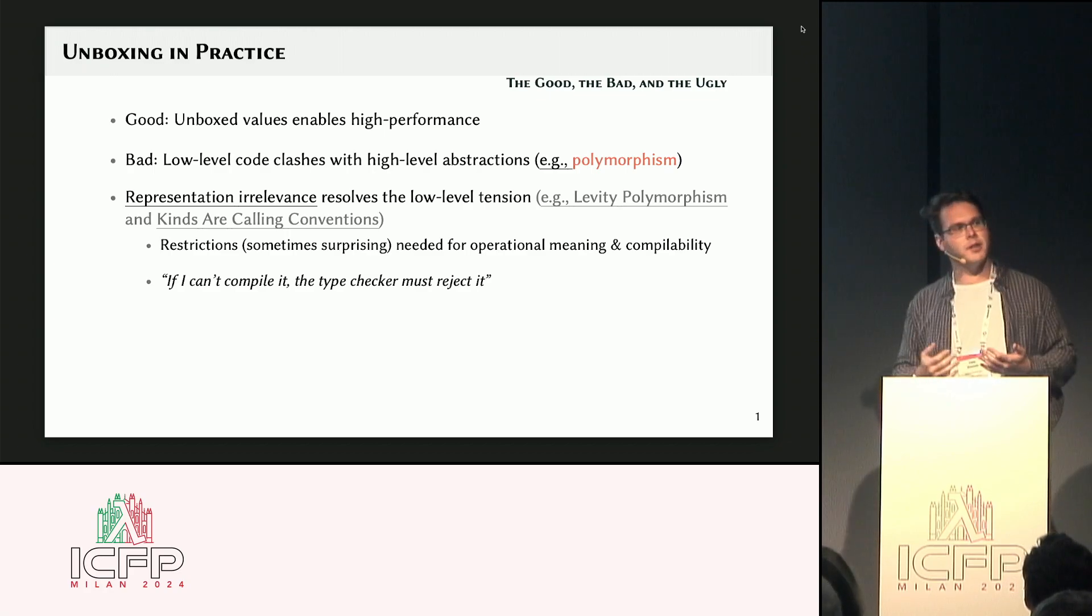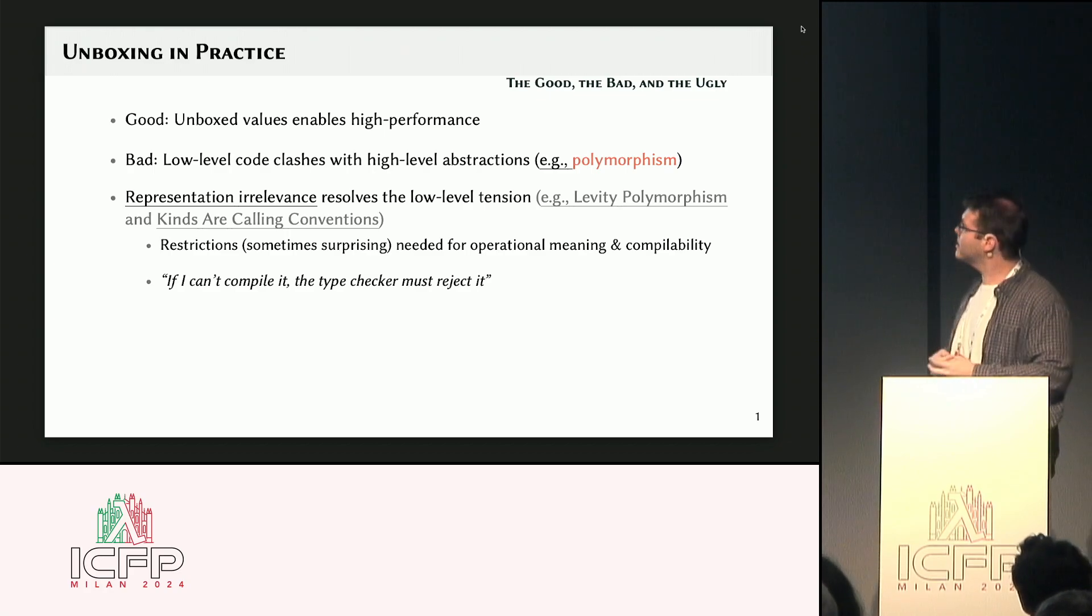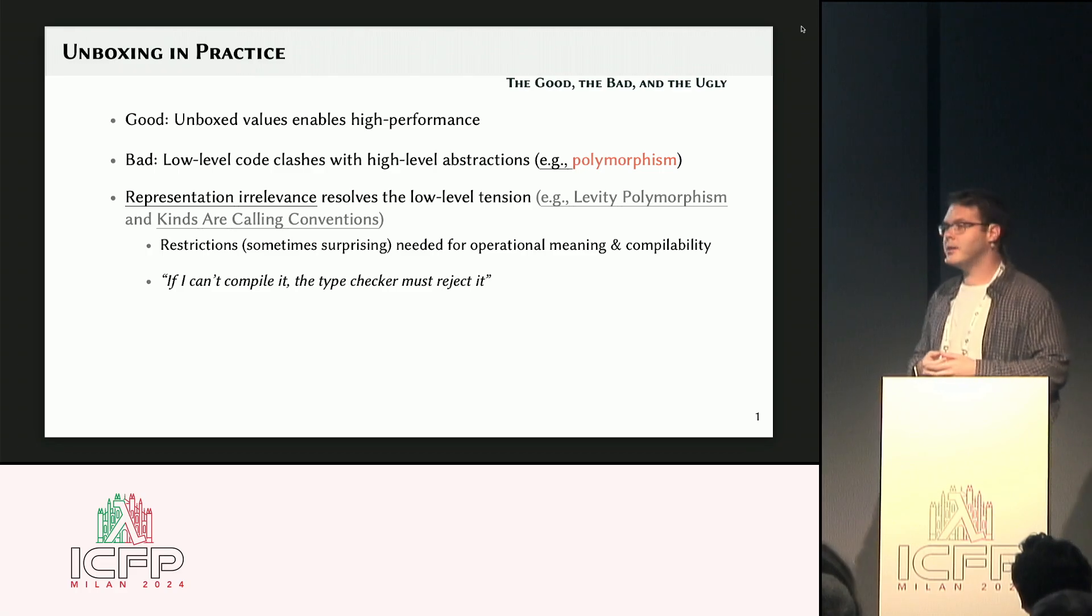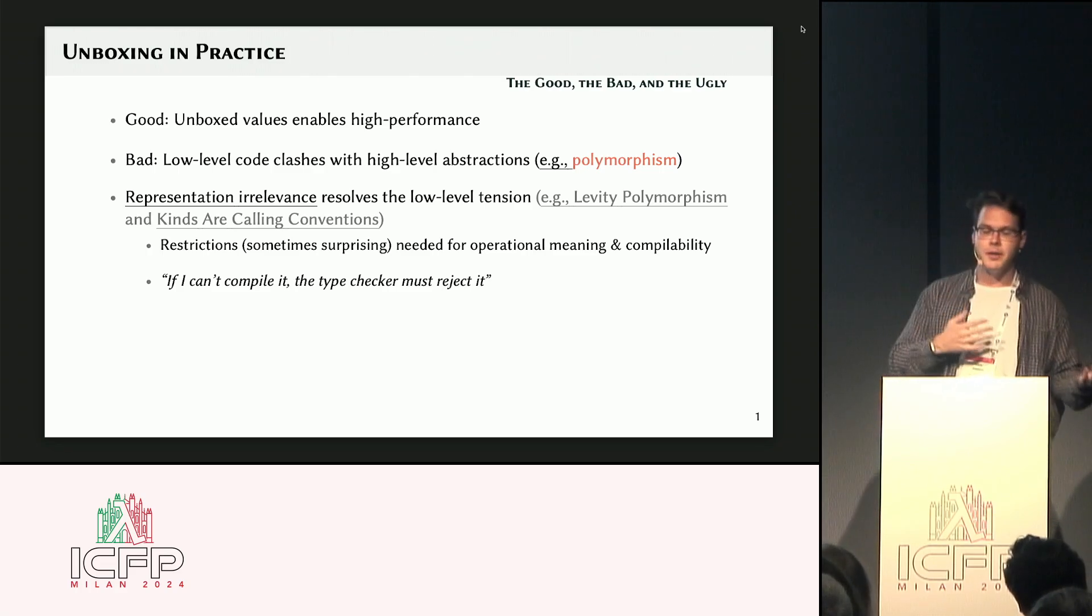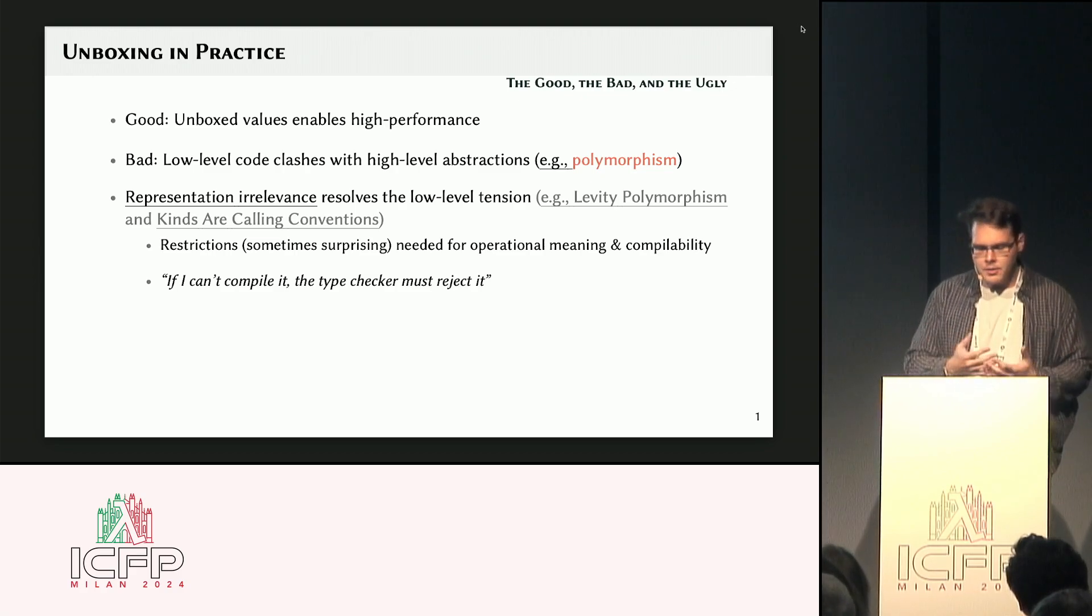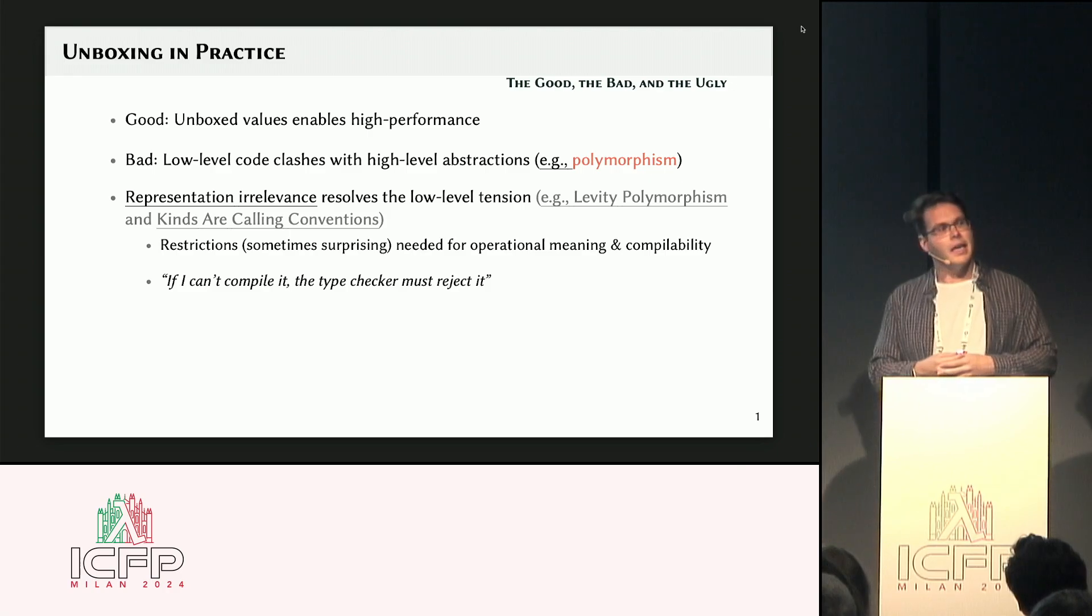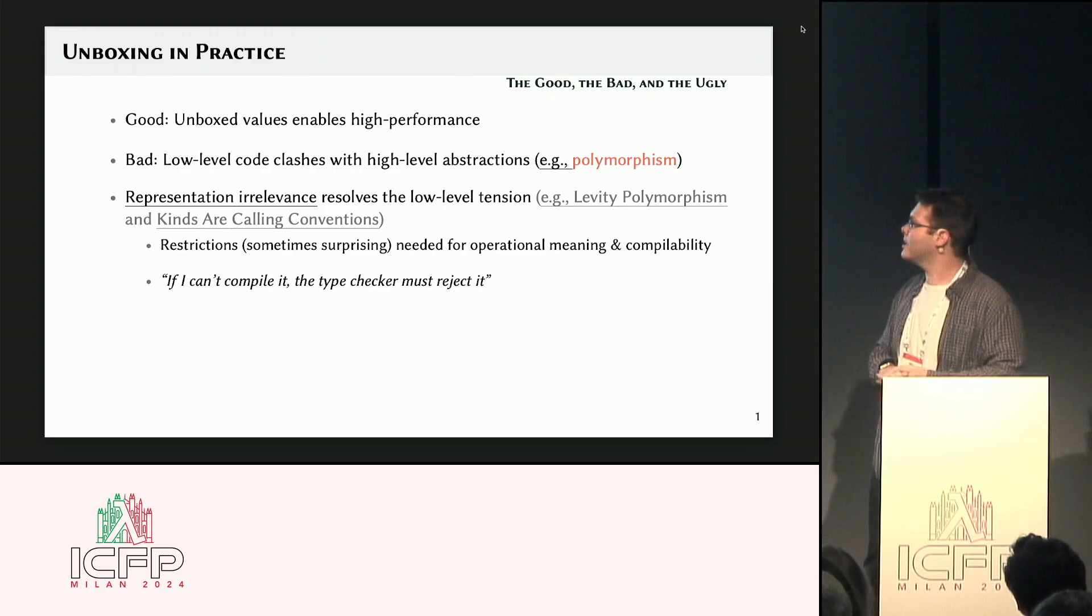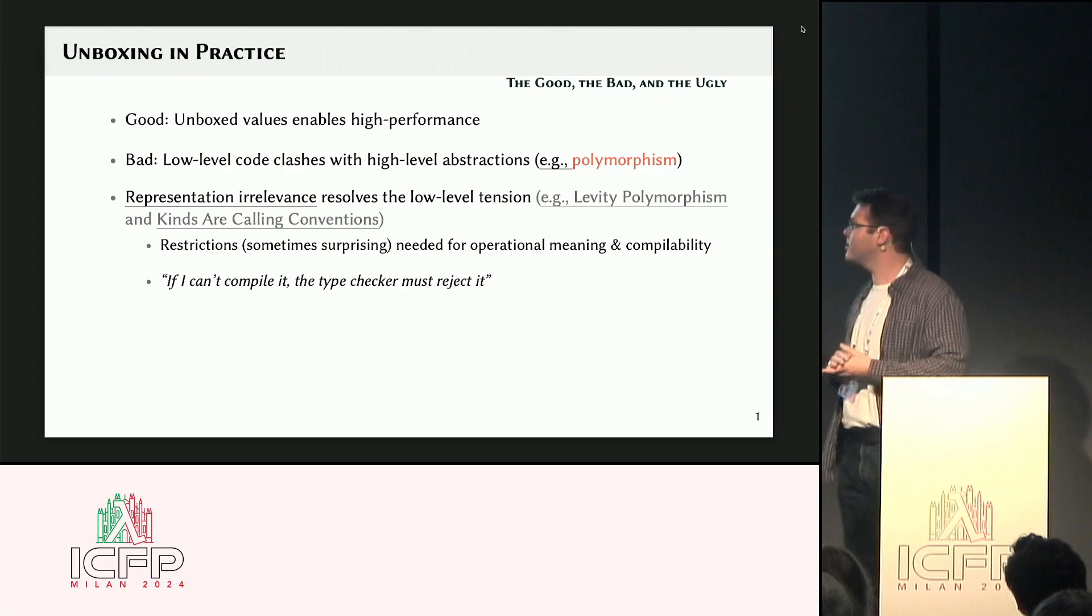And so now we have some fairly robust tools of dealing with this. So, in particular, levity polymorphism is in Haskell these days, and it lets us talk about different kinds of types. Some of them are boxed, some of them are unboxed, and gives us this good way of dealing with the difference. And not only that, we can talk about things like representation irrelevant. So, do I really need to know the representation of a particular type to compile the code or not? So, that means we can abstract out representations and let us write a lot more programs, which is good.